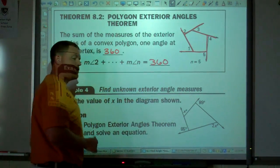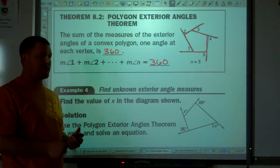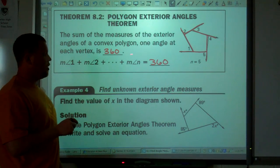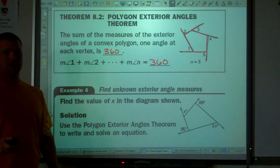Those angles add up to equal 360 degrees. It does not matter if we're talking about a triangle, hexagon, pentagon, octagon, whatever. That is true for all polygons. The exterior angles add up to equal 360 degrees.